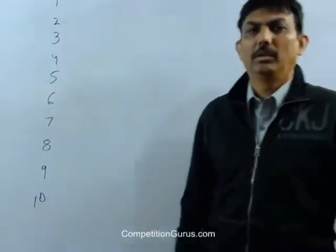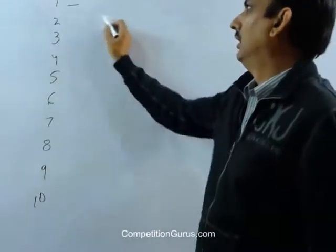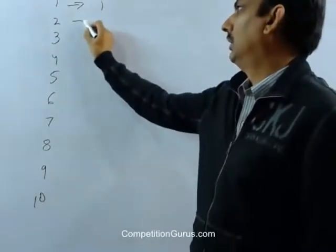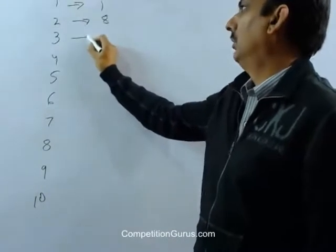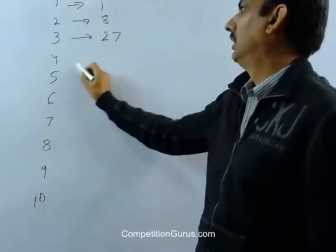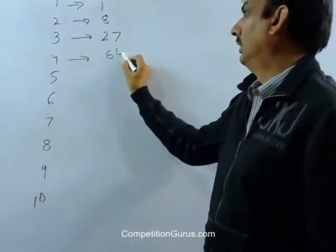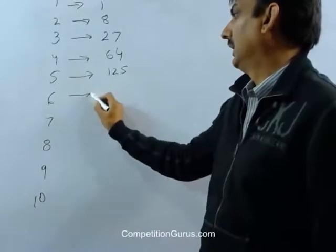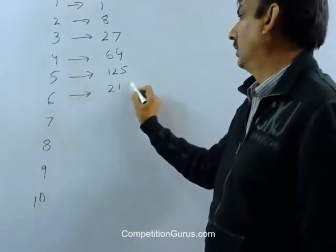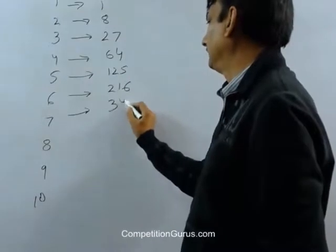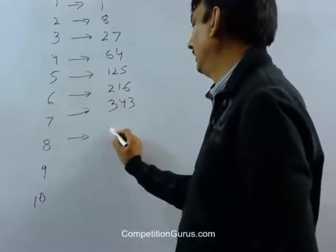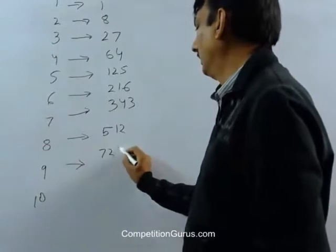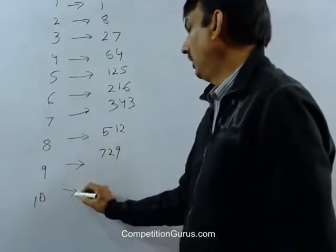These are our numbers from 1 to 10. What is the cube of 1? 1 cube is 1. 1 into 1 into 1. What is 2 cube? It is 8. What is 3 cube? It is 27. 4 cube, 64. 5 cube, 125. 6 cube, 216, 343. 8 cube, 512. 9 cube, 729, and cube of 10 is 1000.